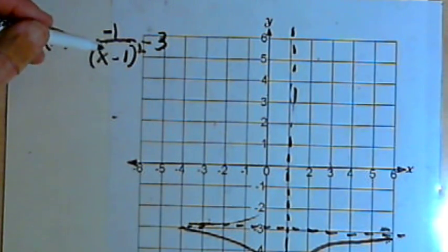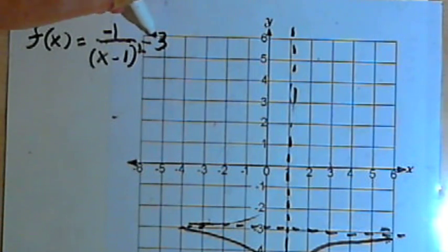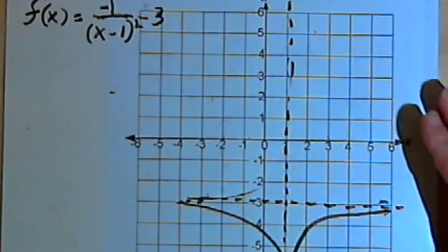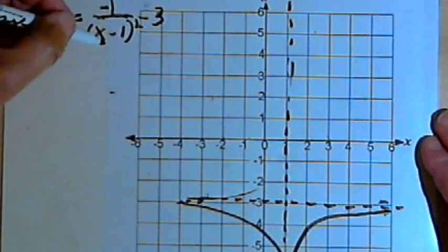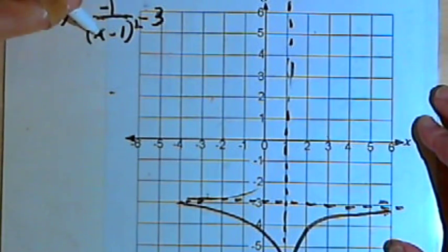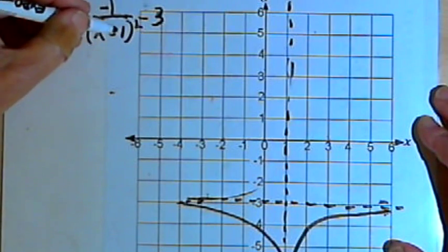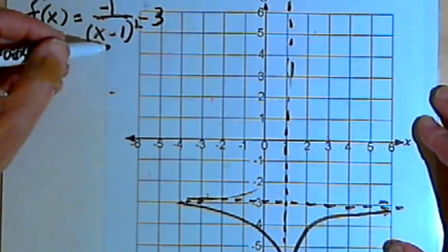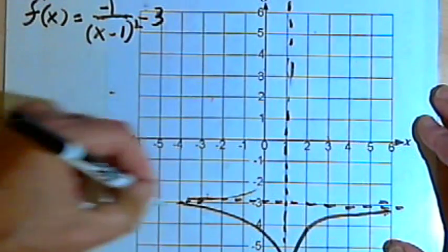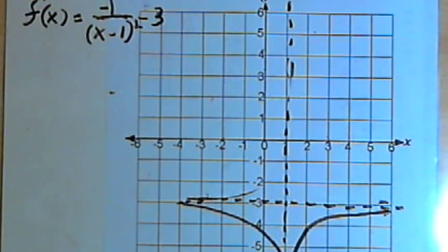So for both of these functions, 1 over x and 1 over x squared, we're basically seeing the same thing happen. We can move the entire graph up or down by adding a positive or negative constant after the fraction. We can shift it to the right by adding a negative constant after the x before squaring, or shift it to the left by adding a positive number after the x before squaring. And we can flip it across the horizontal asymptote by changing the sign in the numerator. Hope that helps. Take care, I'll see you next time.